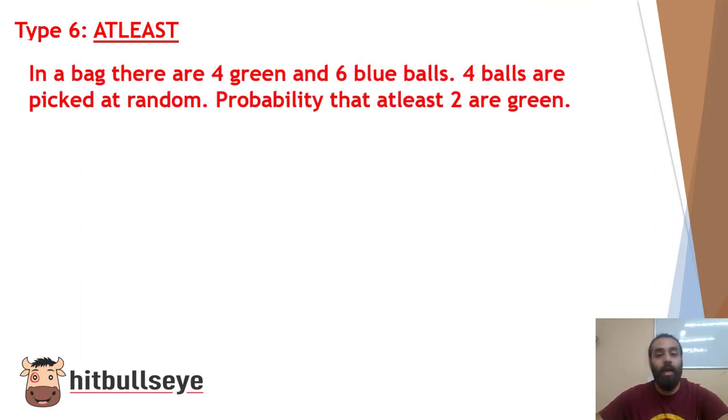Now in a bag, there are four green and six blue balls. Four balls are picked at random. Probability that at least two are green. Now understand the concept over here, the connecting word is at least. Now what does at least mean? At least means that you have two minimum green balls.